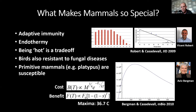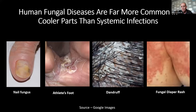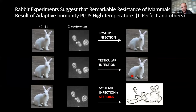Together with adaptive immunity, this may account for our relative resistance. Human fungal diseases are more common in the cooler parts of the body — nail fungus, athlete's foot, dandruff, which is actually an infection, and fungal diaper rash in babies occur in cooler regions. In the lab, experiments show the powerful role of temperature in fighting fungal disease. Work by John Perfect showed that a rabbit, with a temperature of 40 to 41 degrees, cannot get a systemic infection with cryptococcus even if it's put directly into the brain — but you can give it in the cooler areas like the skin and the testes. If you give steroids, however, temperature is not enough — the rabbit dies.